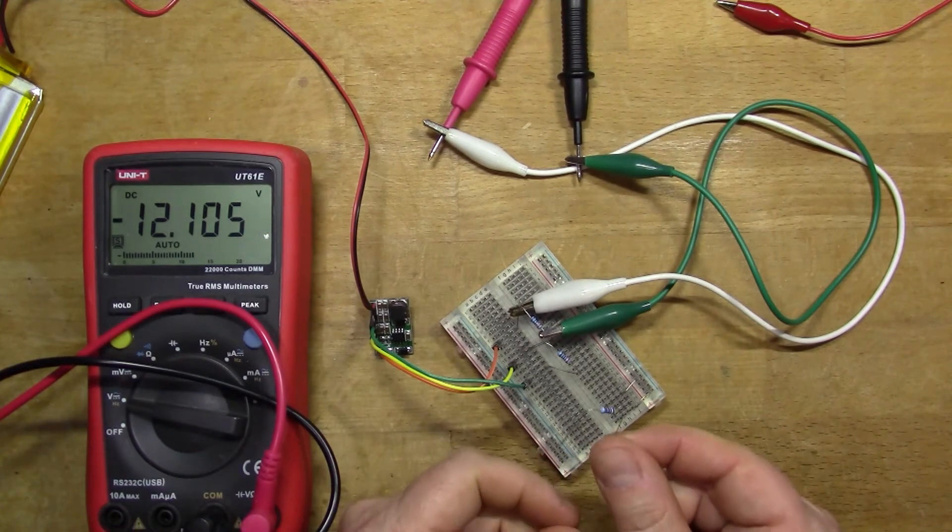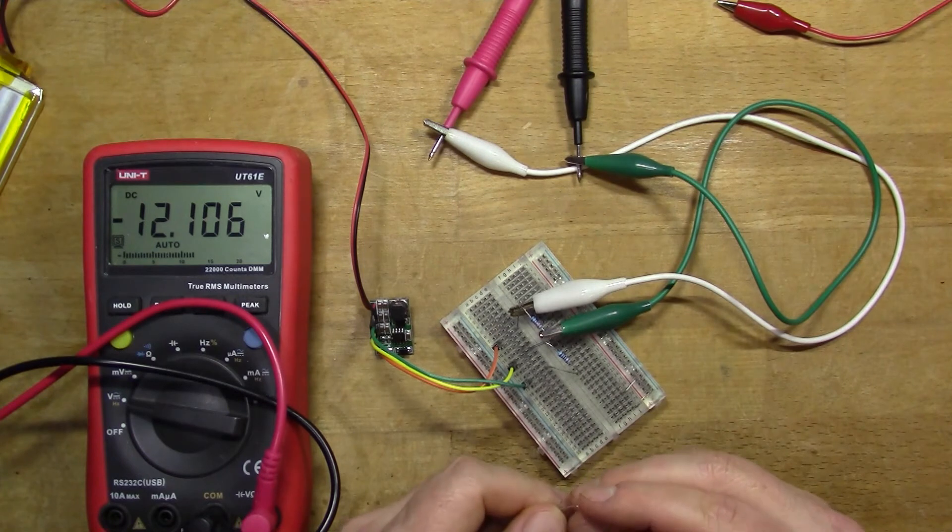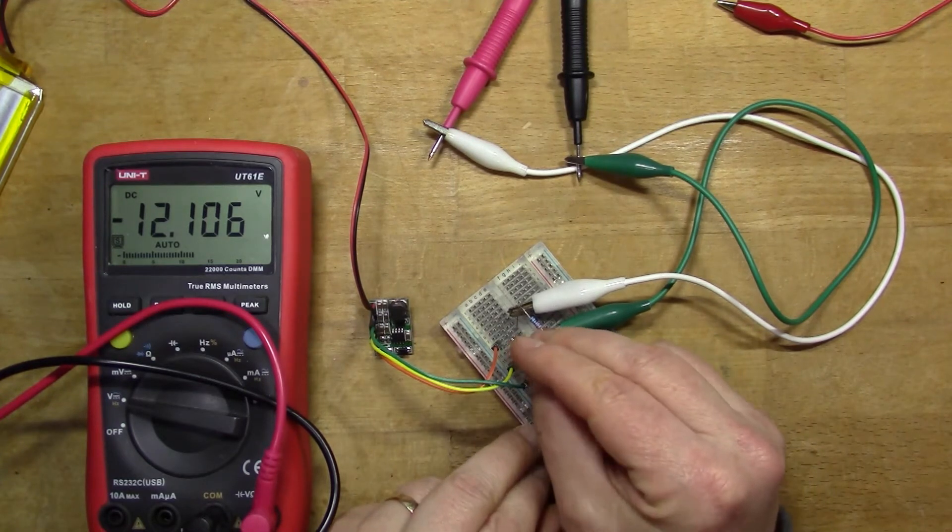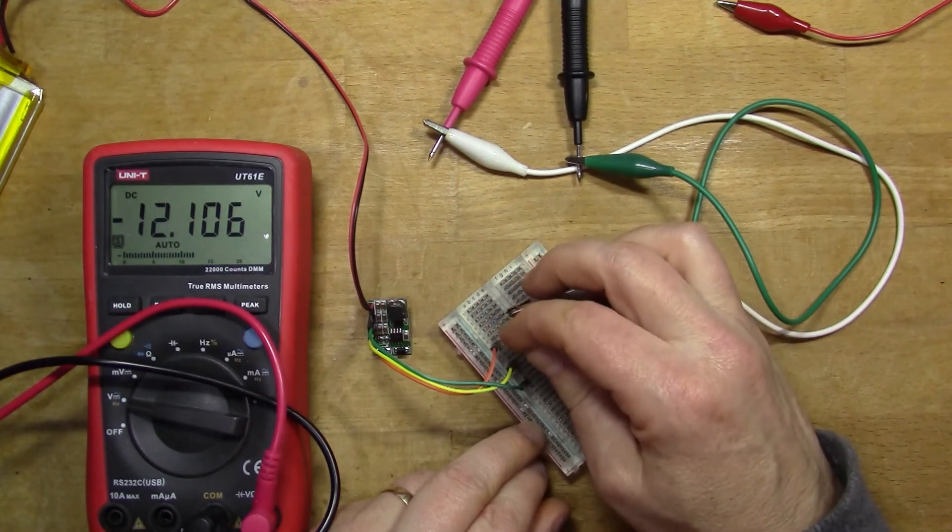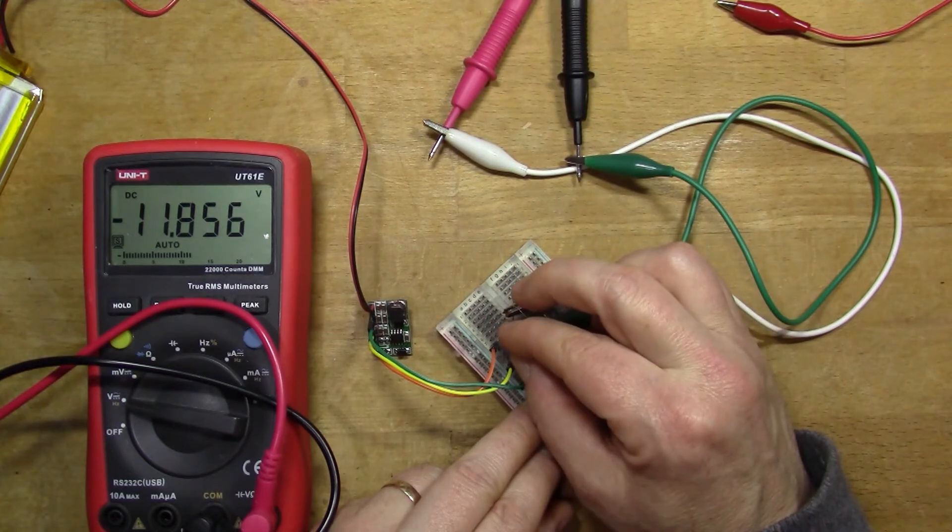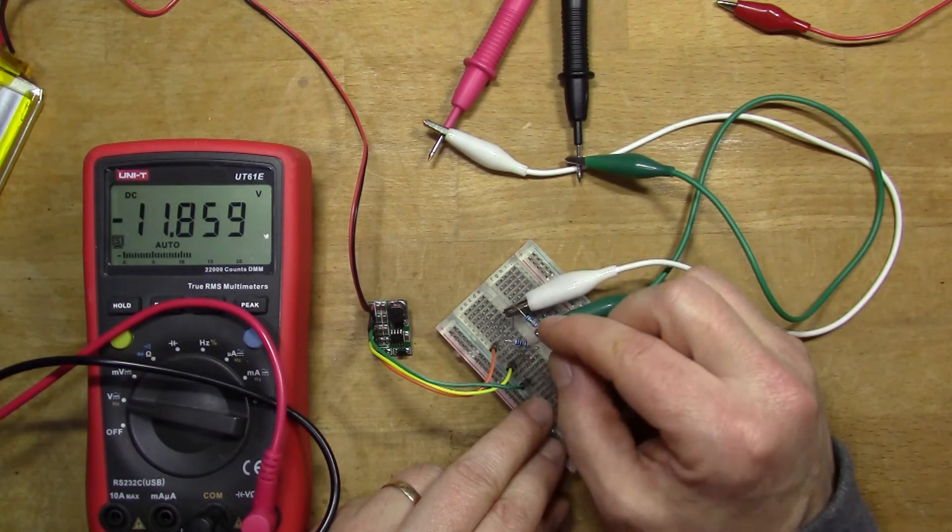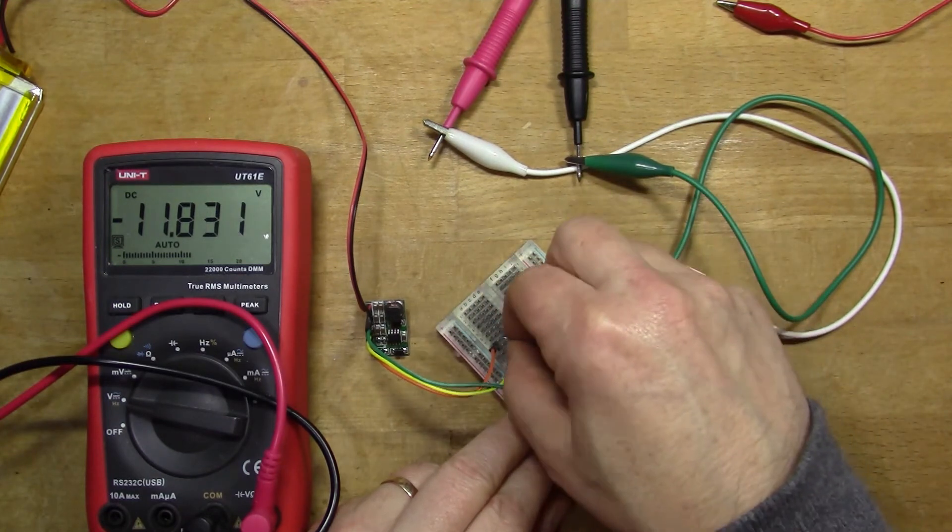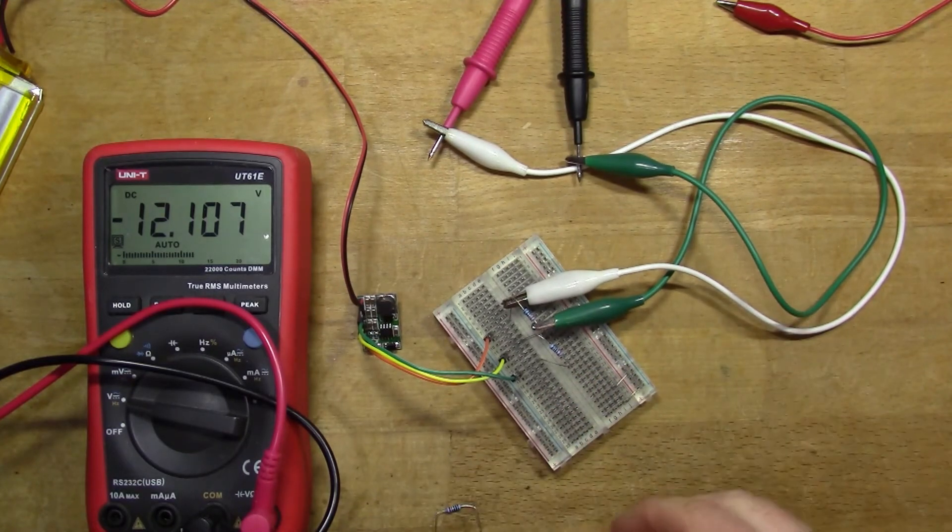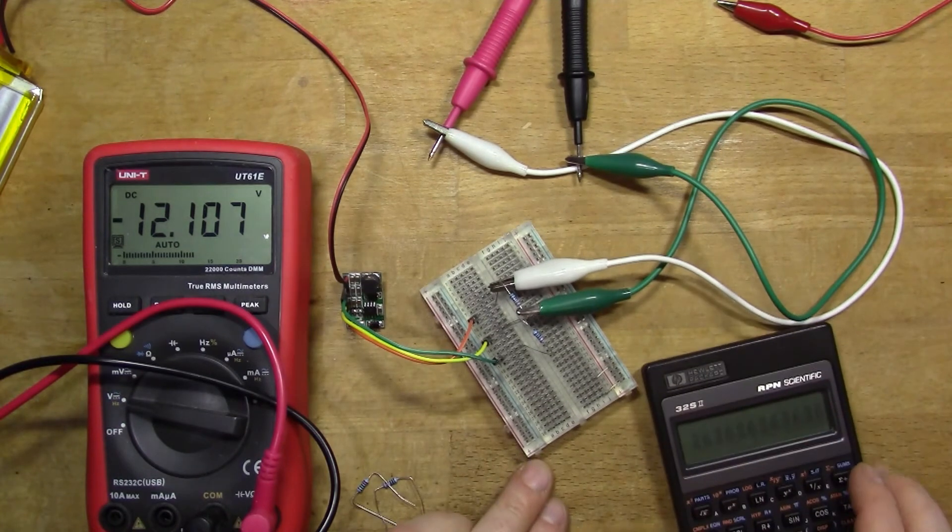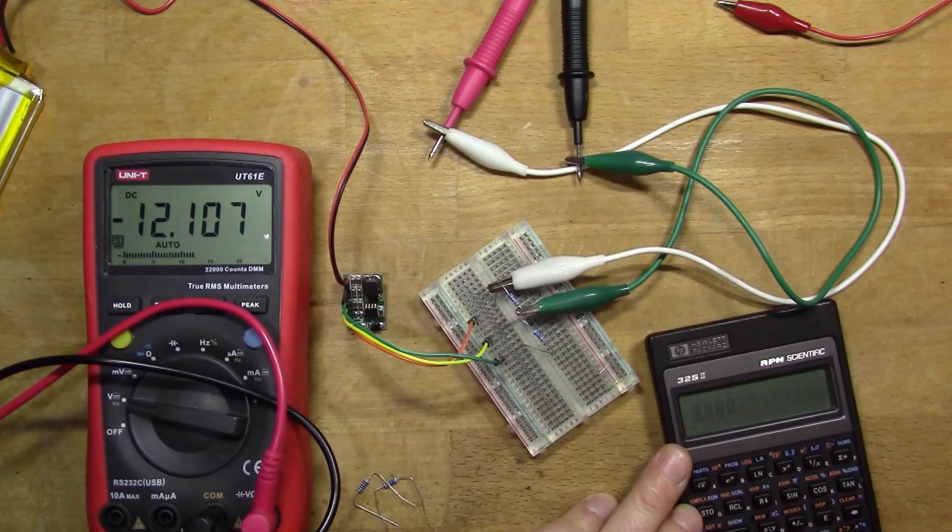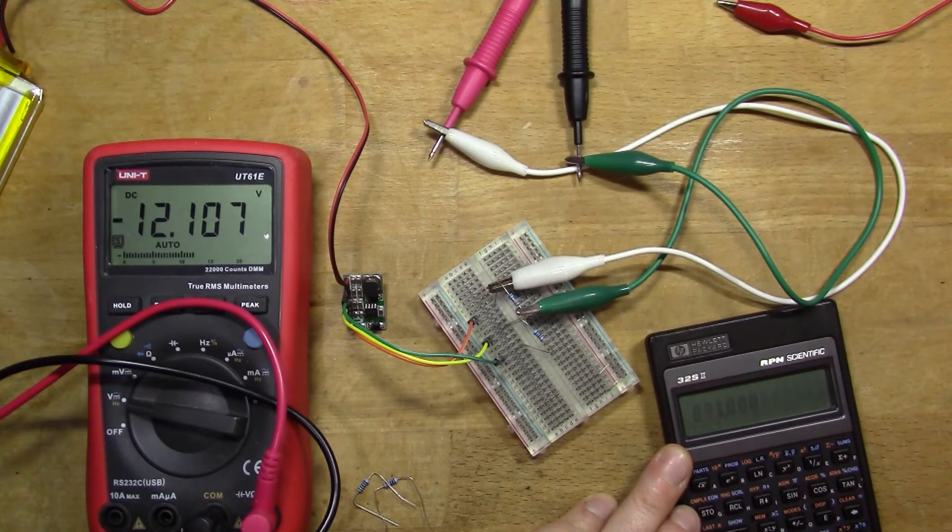I've got a smaller resistor here, a 270 ohm resistor. I'm going to plug this in and see if the voltage drops very much from the 12.1. So I'll plug this in on this side. Okay, so it's down to 11.8 and that resistor's getting quite hot now, don't think I want to leave that in there for too long.